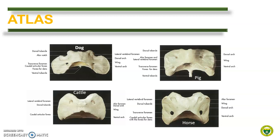Let us begin with the atlas. One of the things that you need to consider is the foramina present. Aside from the vertebral foramen, there are 3 major foramina in the atlas: the lateral vertebral foramen, the transverse foramen, and the alar foramen. In dogs, there is no alar foramen; instead, there is an alar notch, as shown here.